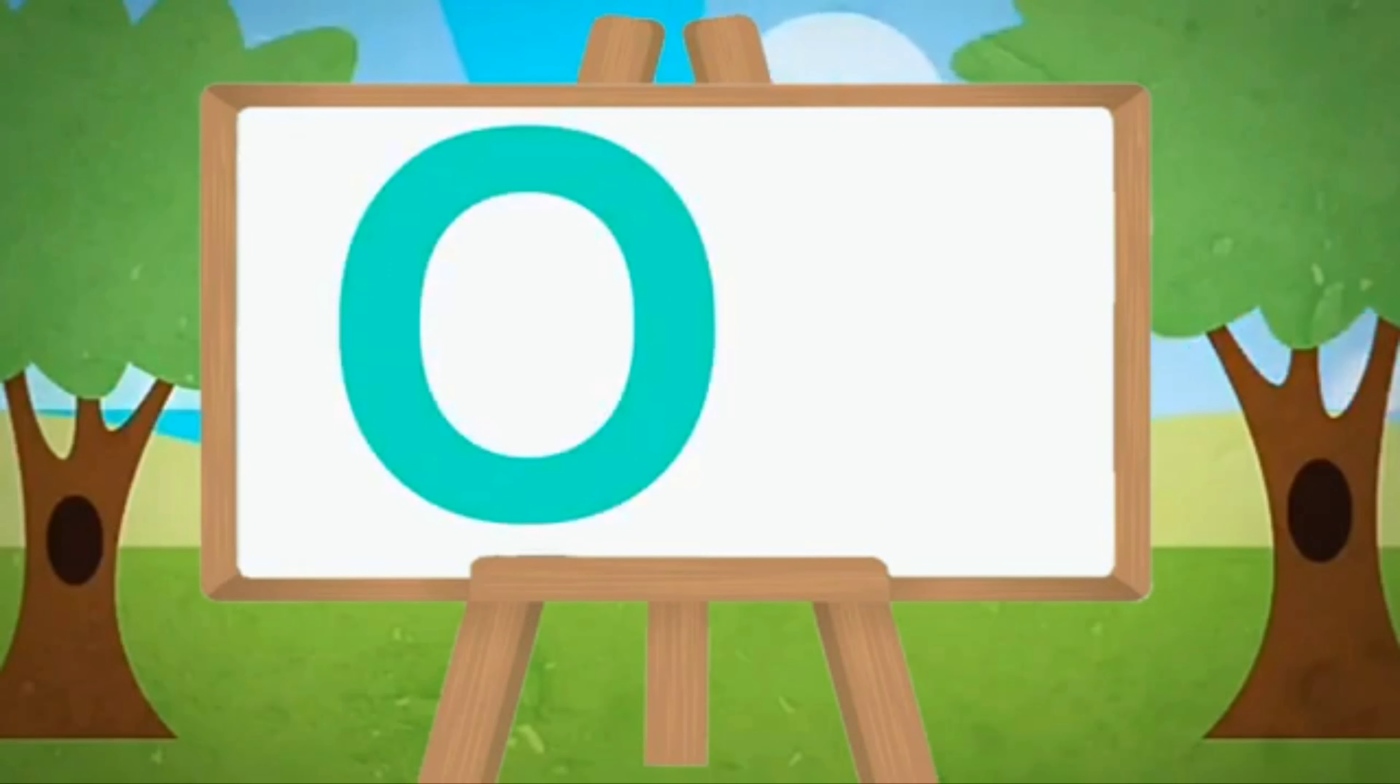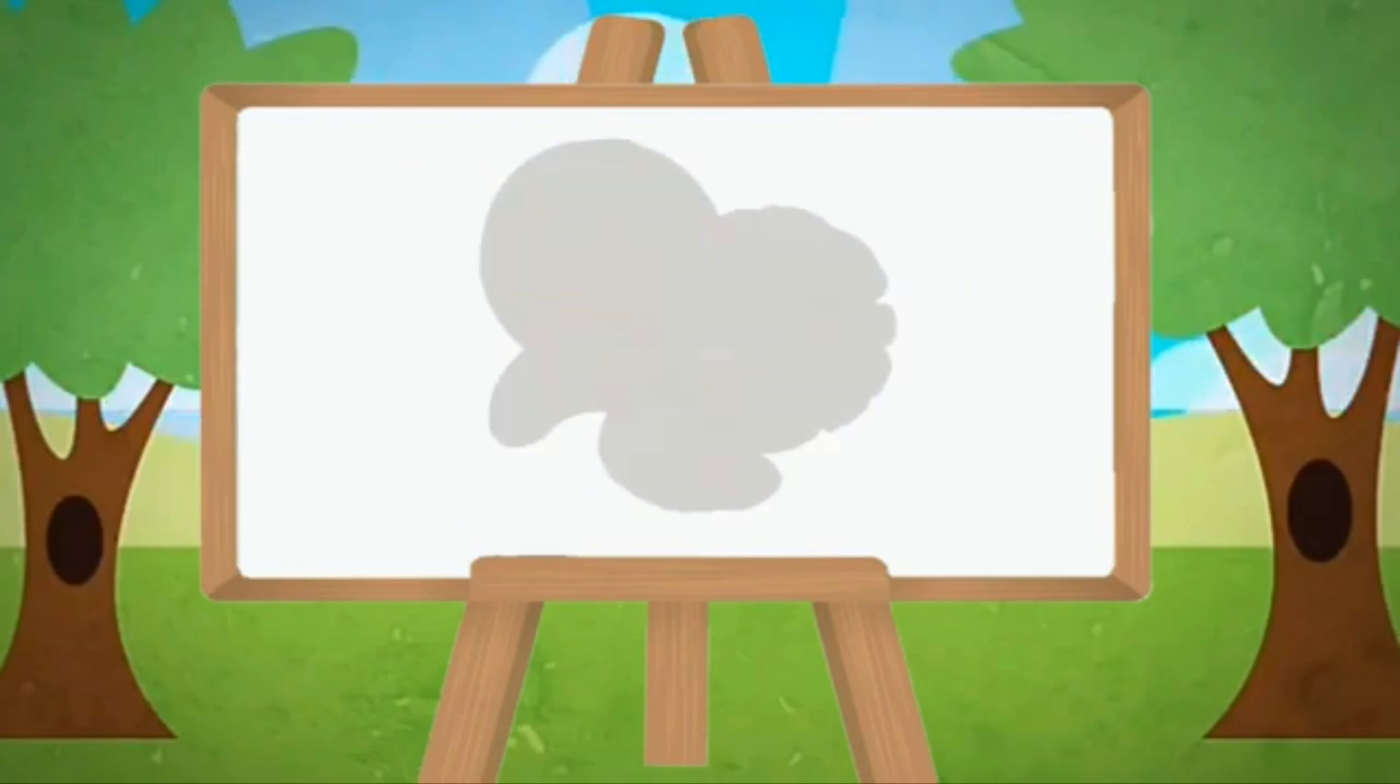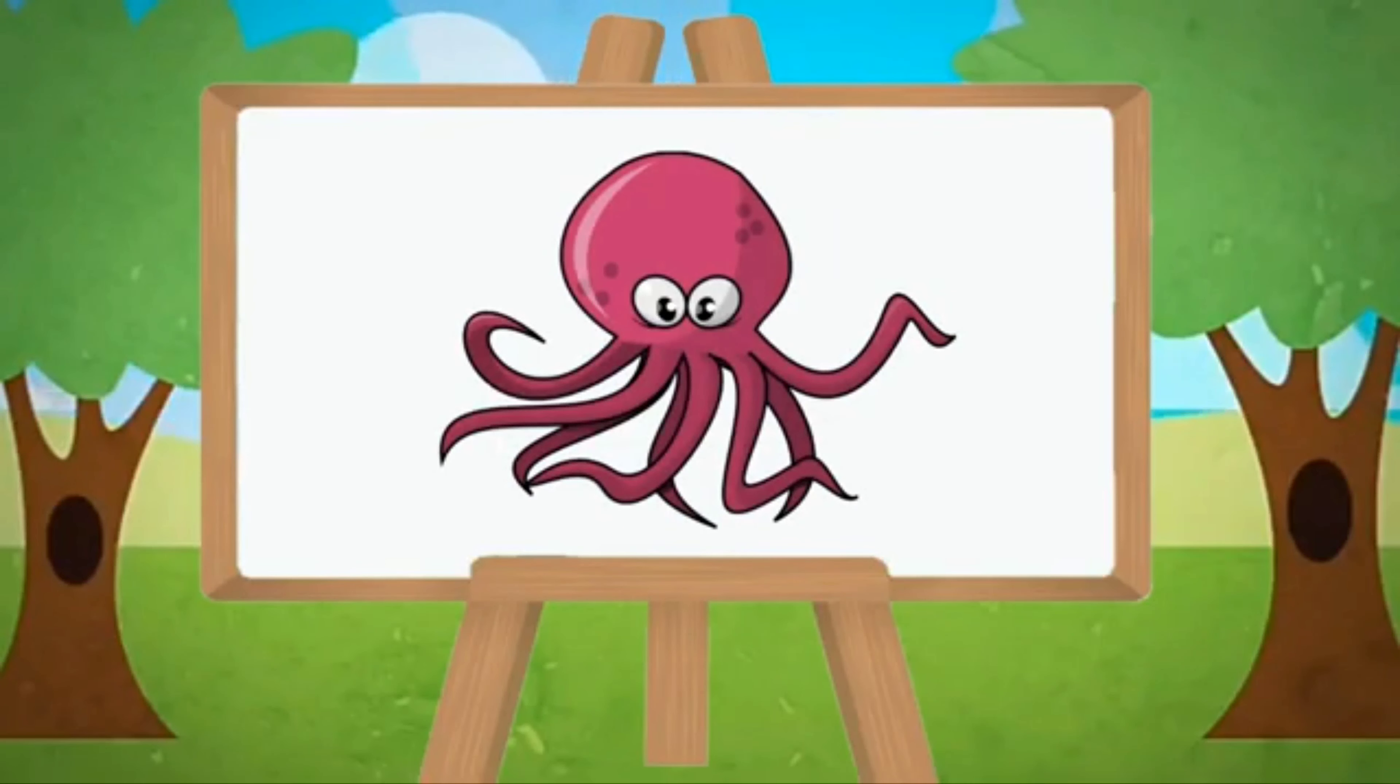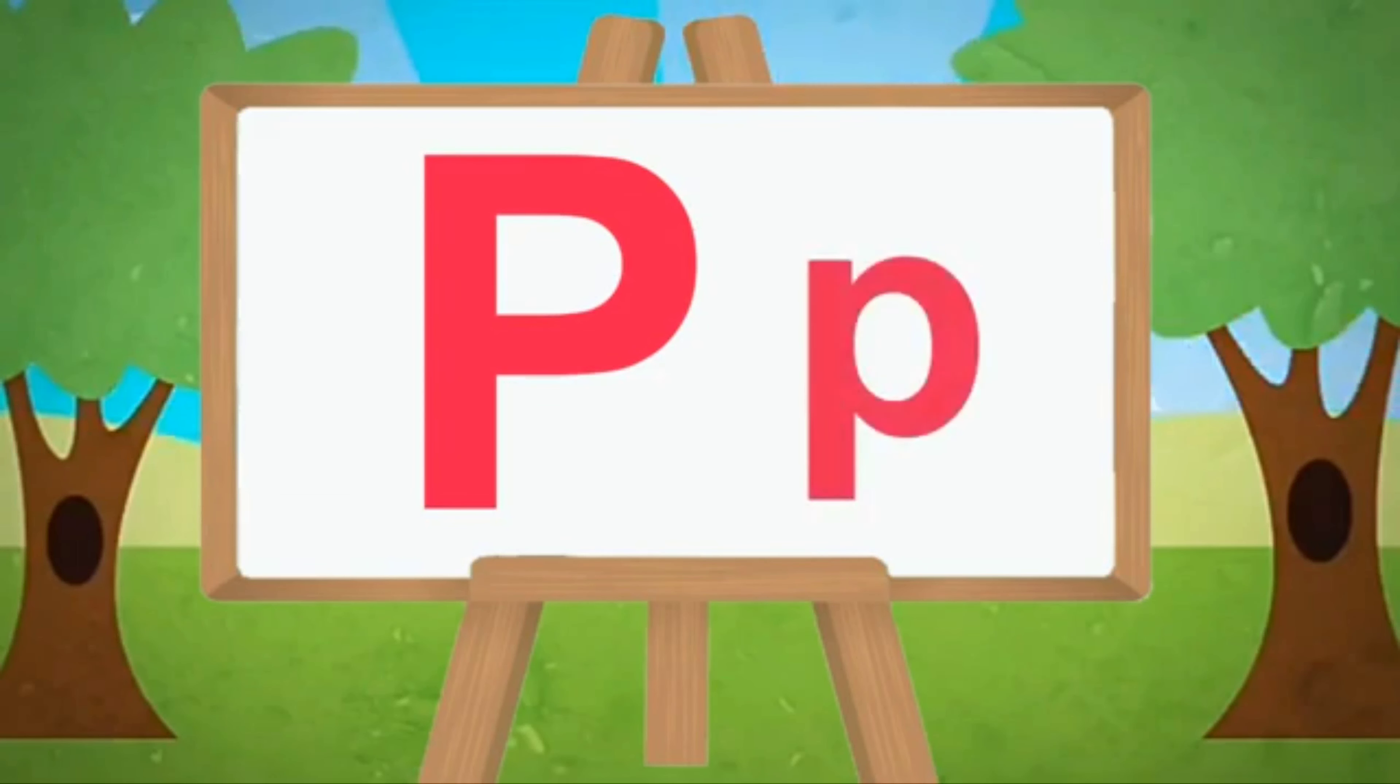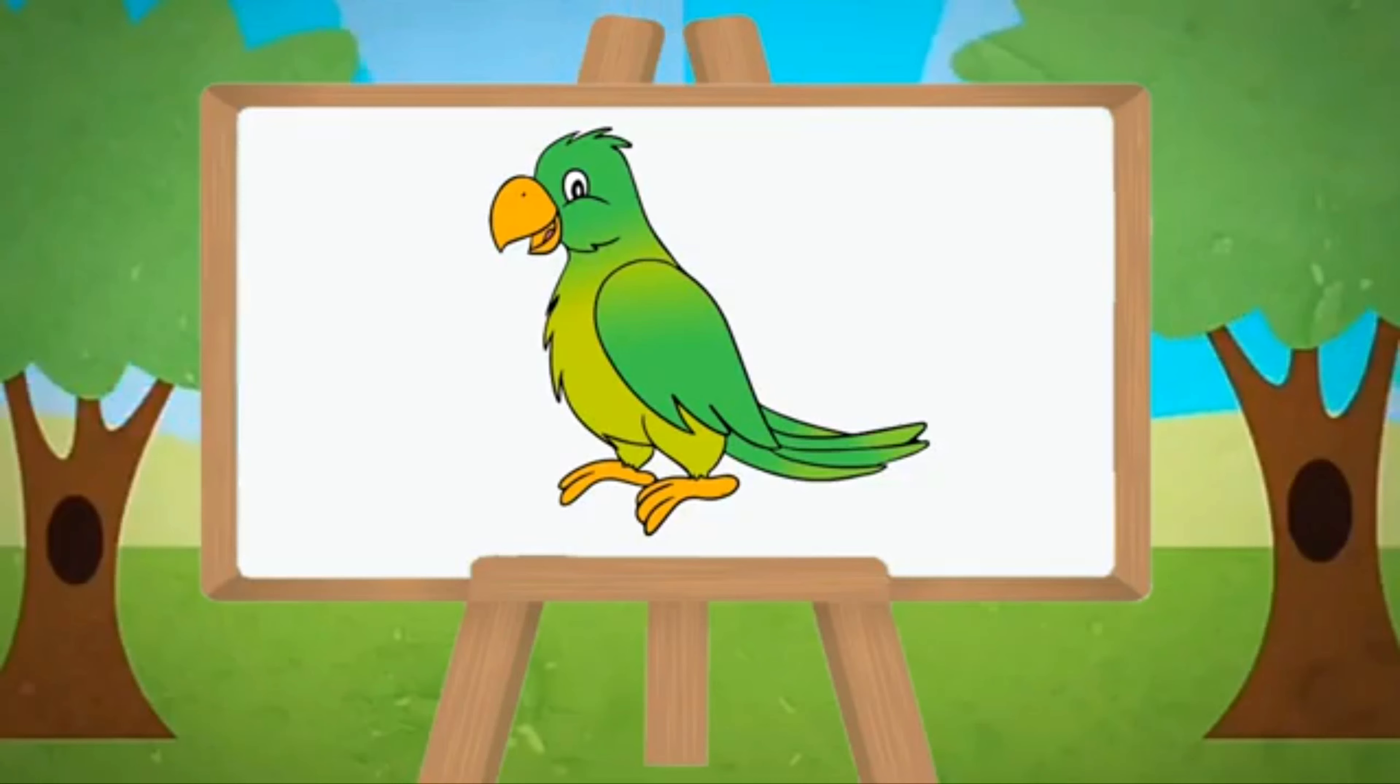Capital O, small o. O for orange, O for octopus. Capital P, small p. P for pencil, P for parrot.